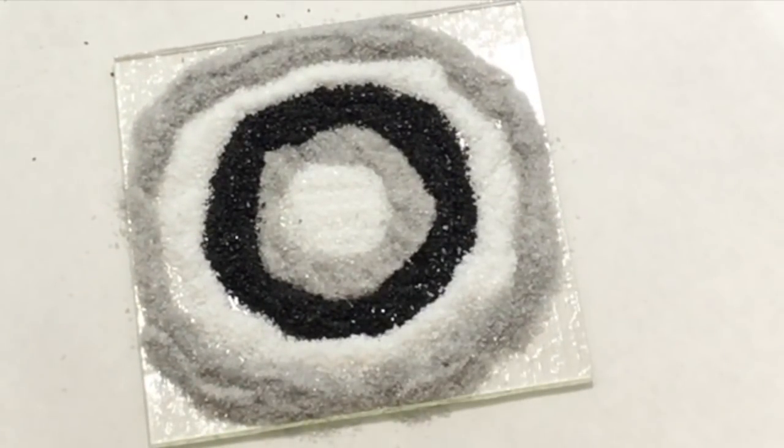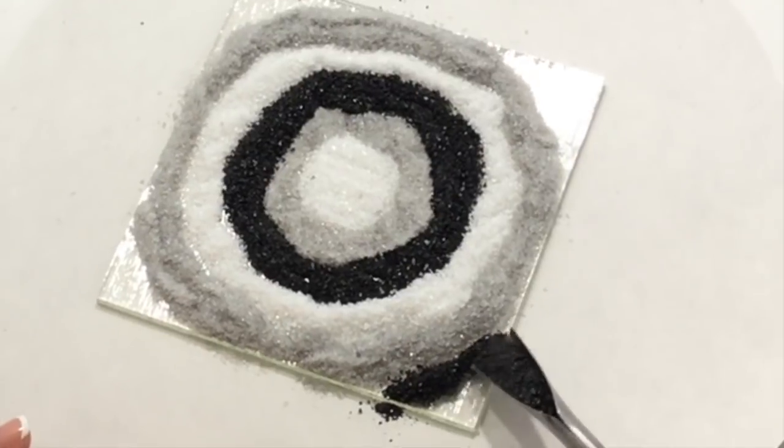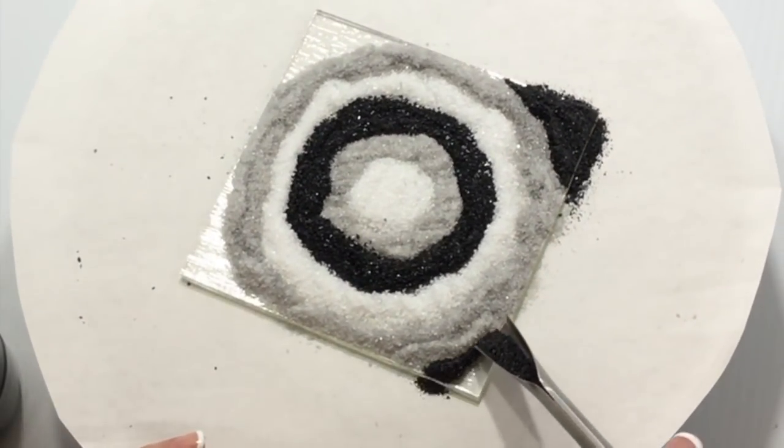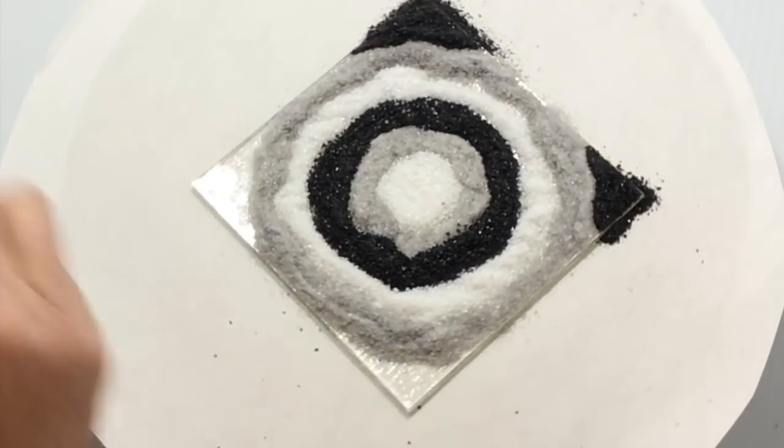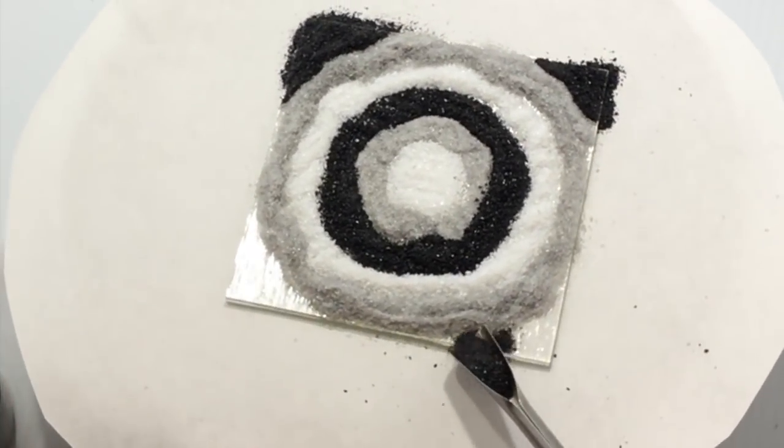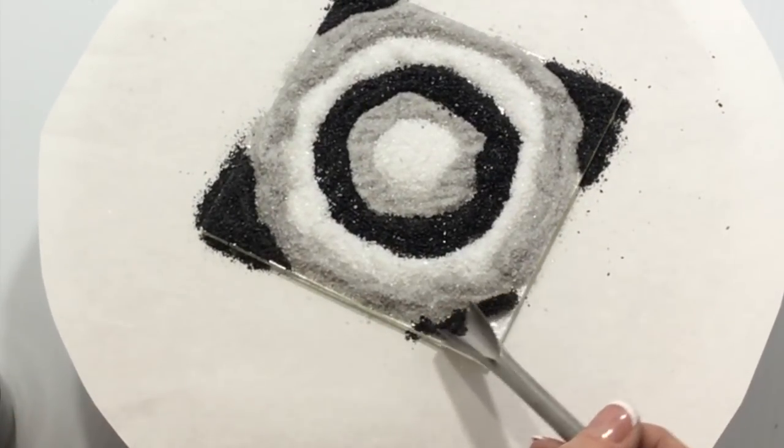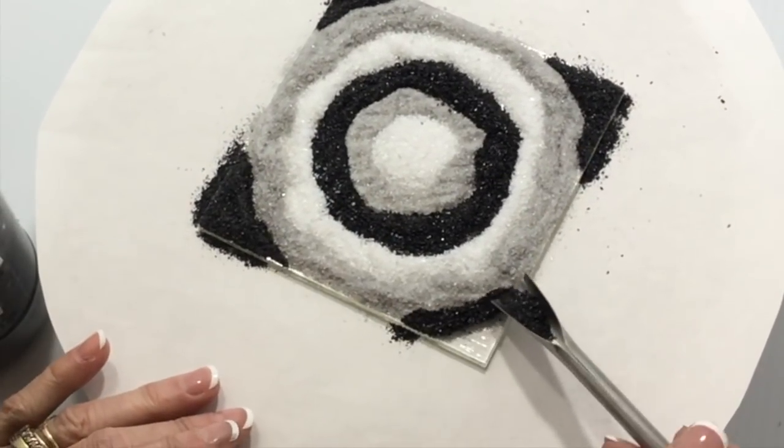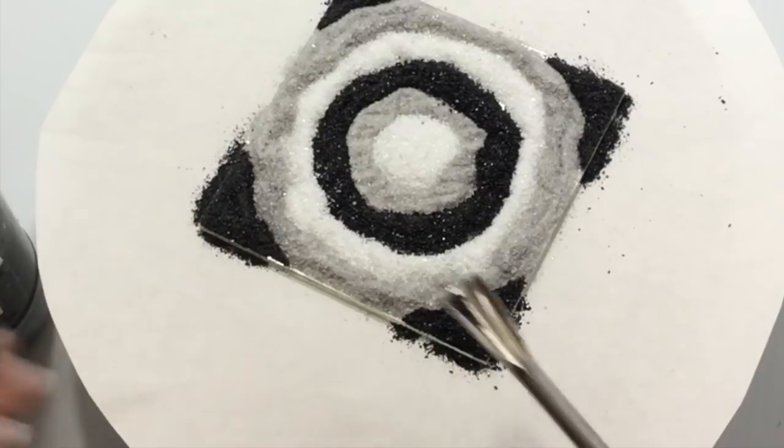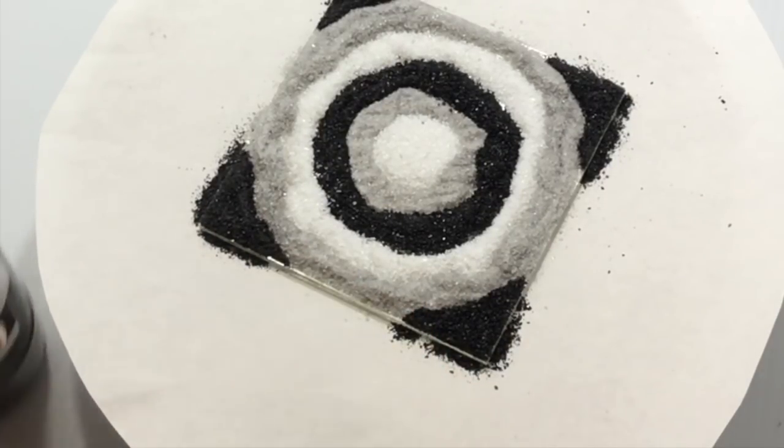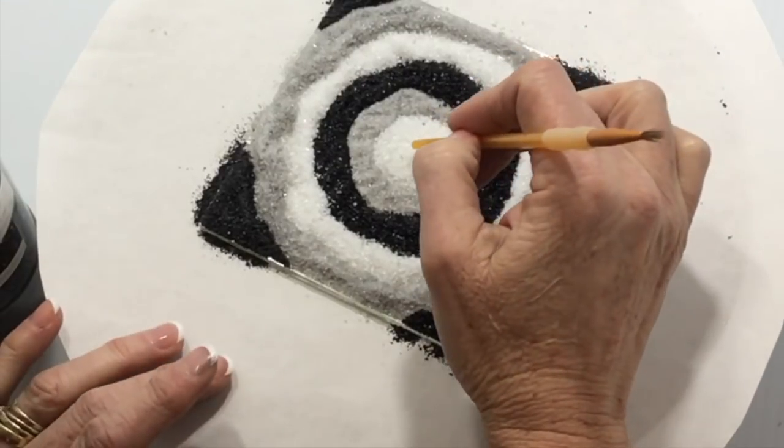All right, now I'm going to put black in the corners. I think I want to add a little bit of black right in the center, so I'm going to create a little hole.